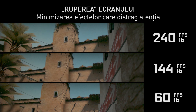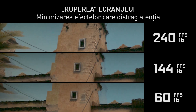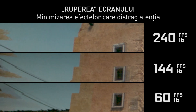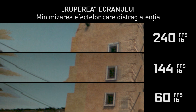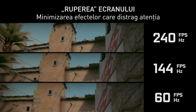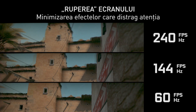Looking at tears in CSGO, we can see as we zoom in on the vertical brown tower, the tears at 240 Hz are much smaller than the tears at 60 Hz because the animation steps are much more frequent and therefore the tearing is much less pronounced at 240 Hz.